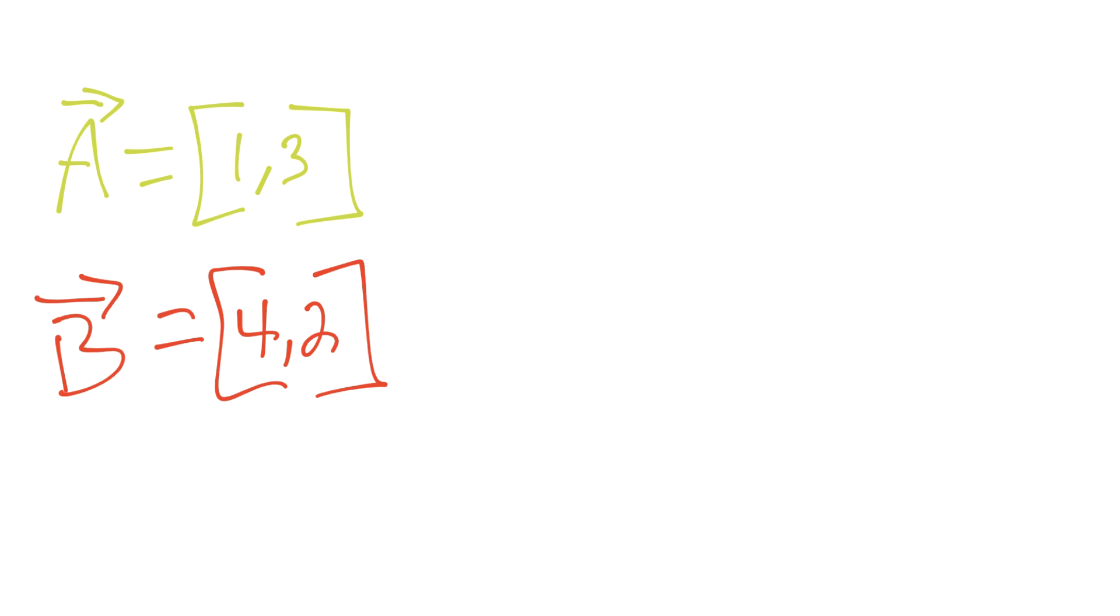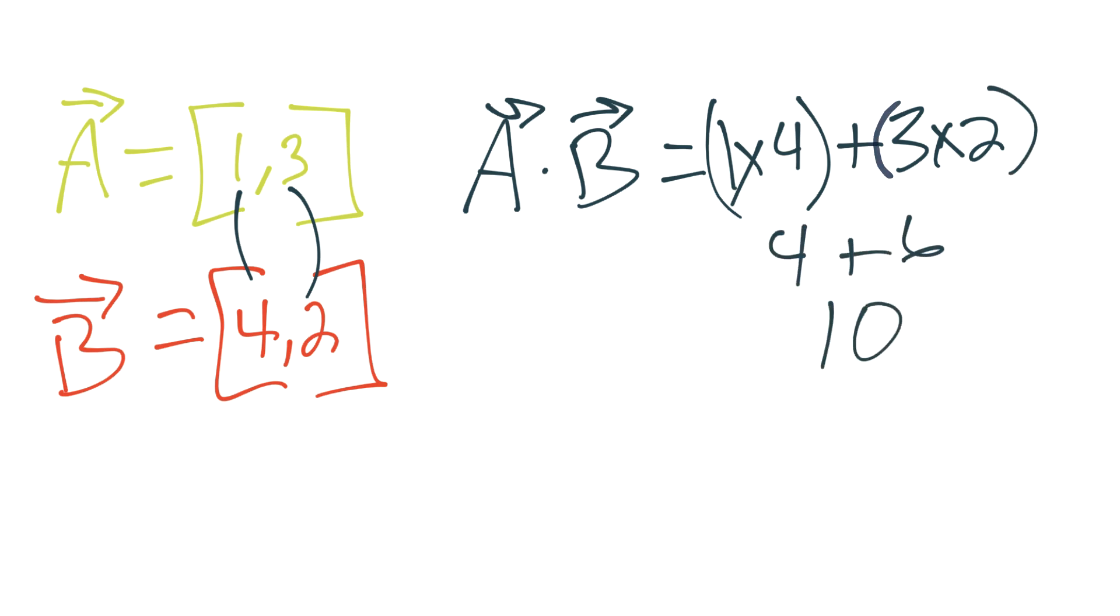So to do the dot product, you would write that out as it's literally just A dotted with B. And generally here you'll see the vectors. And the way that you do it is it's just the basically the constituents times the same placed constituent in the other vectors. So it would be 1 times 4 plus 3 times 2. So A dotted with B would be 1 times 4 plus 3 times 2. So that would be 4 plus 6, otherwise known as 10. So A dot B would be equal to 10. And of course this is a scalar value.